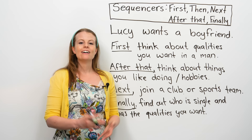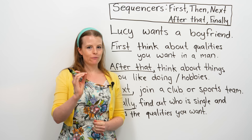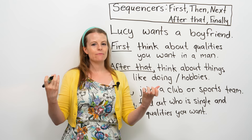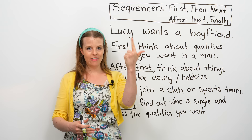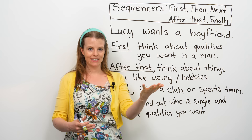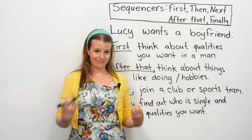Those were my tips for Lucy. I'm not really good with the whole dating thing, so I want to know — what is your advice for my friend Lucy? For your homework, in the comments section, write some advice using sequencers for how Lucy can find the man of her dreams. Use the words first, then, next, after that, and finally. Lucy will be looking at these comments for dating advice, so please think creatively and really help her.